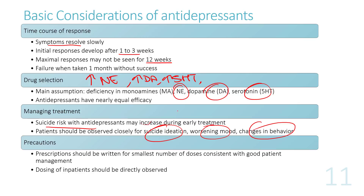Patients need to be observed closely for suicide ideation, worsening mood, and changes in behavior. Dosing should be directly observed, and outpatient prescriptions should be made for the smallest amount of doses possible.